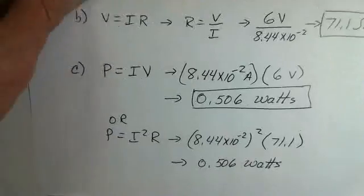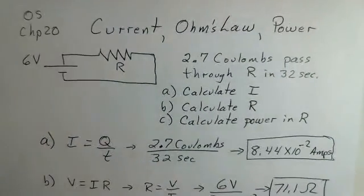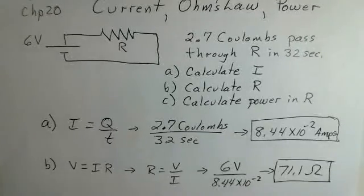So an example here of being specified what the charge value was passing through the resistance in 32 seconds. We have to do that preliminary calculation. Then we used Ohm's law to find the resistance. And then we can use P equals IV to calculate the power. So keep practicing.